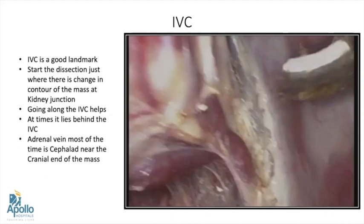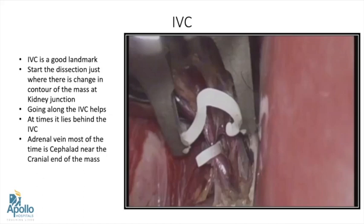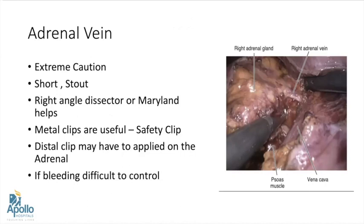As we ascend up, usually the adrenal vein lies in a more cephalad direction. In case of pheochromocytoma, as they are very vascular, we may see a lot of neovasculature as well. Those can be either clipped, cut, or an electrosurgical instrument can be used to take care of them. Coming to the adrenal vein, we should deal with it — especially on the right side — with extreme caution as it is very stout and drains directly into the IVC. A right angle dissector or a Maryland helps in their dissection. Metal clips are very useful and can act as safety clips. Distal clips may also be applied onto the adrenal. If bleeding is difficult to control, safety clips are very, very useful.